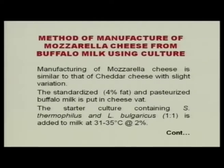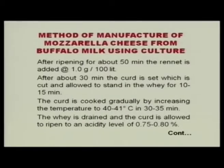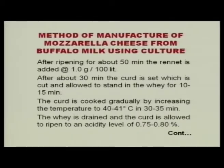Pasteurized milk is used so that it is safe for consumption. The starter culture used here goes for high temperature — Streptococcus thermophilus and Lactobacillus bulgaricus in 1:1 ratio is added at a temperature of 31 to 35 degree centigrade, normally at 2%. After ripening for about 15 minutes we add the rennet at the rate of 1 gram per 100 litres. After about 30 minutes the curd is set and allowed to stand for 10 to 15 minutes. The curd is cooked gradually by increasing the temperature to 40 to 41 degree centigrade in 35 minutes.